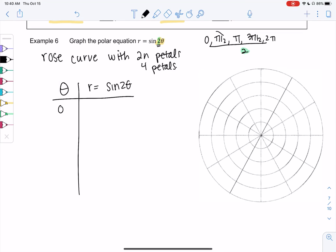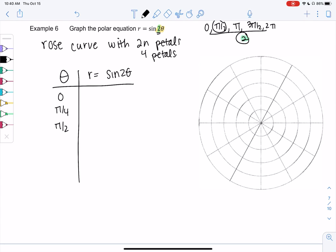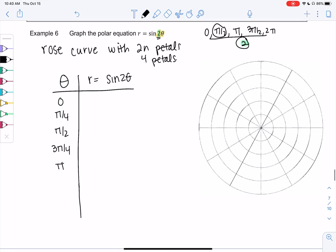We'll go from 0 to pi over 4, to pi over 2, to 3 pi over 4, to pi. We might want to go all the way to 2 pi, but let's go to pi, see if that's enough, and then we can add more points if needed. Pause the video and plug all these angles into sine 2 theta. I get 0, 1, 0, negative 1, and 0.